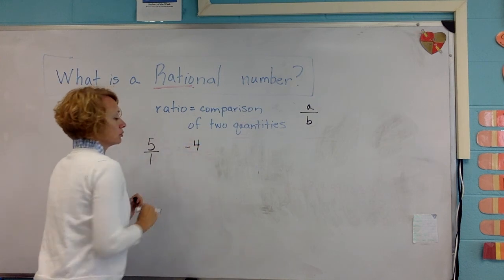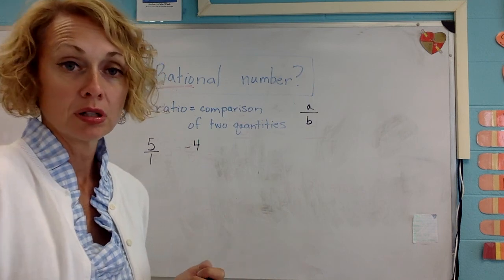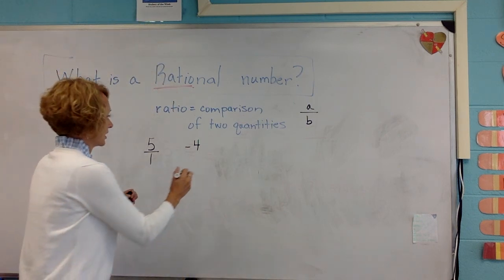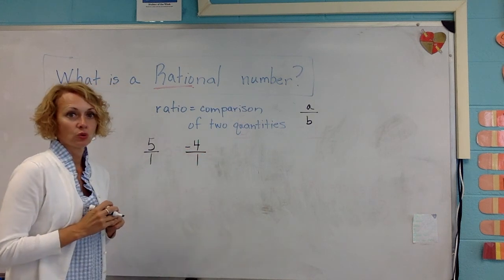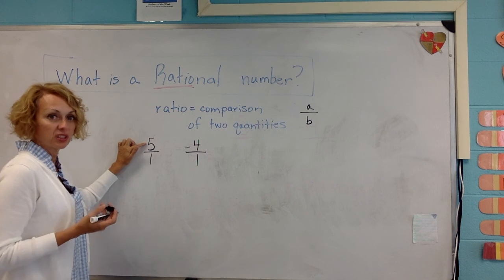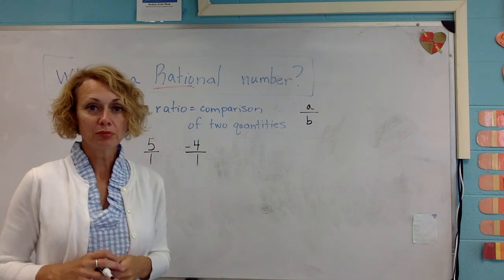What about negative four which would be an integer, you know the opposite of a whole number. So can negative four be written as a fraction? Yes it can. Negative four over one. So what we've now said is whole numbers are considered rational numbers. Integers are also considered rational numbers.